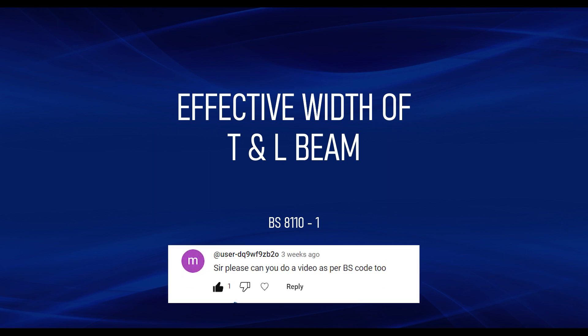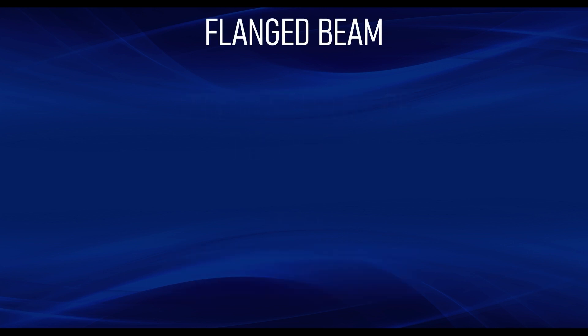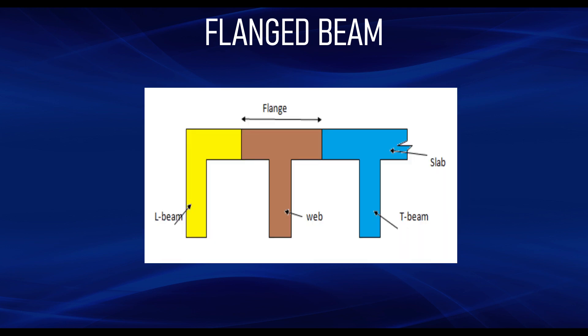That is why I'm making this video. A flange beam is a little bit different from a rectangular beam due to the need for us to calculate the effective width. These flange beams are common whenever you have a connection of slab and beam. In that case there is a need for you to determine whether your beam is an L beam or a T beam. This actually occurs when a beam is constructed monolithically with the slab, so some part of the slab tends to behave as the beam.